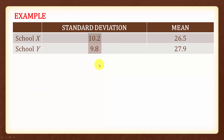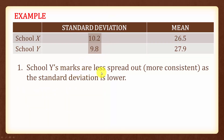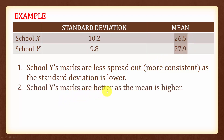Comparing the standard deviation, school Y's marks are less spread out because its standard deviation is lower. Less spread out also means the marks are more consistent. Comparing the mean, school Y's marks are better because the mean is higher, meaning that on average, school Y students are scoring better. Therefore, school Y's overall performance is superior.